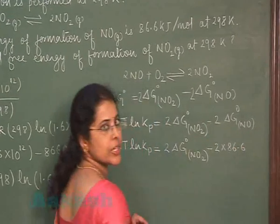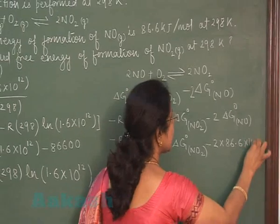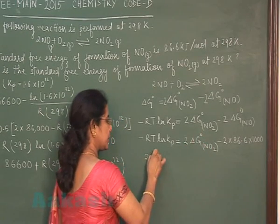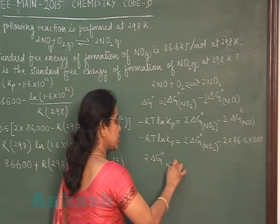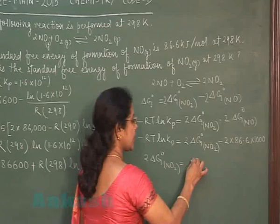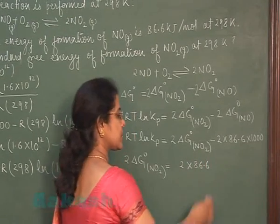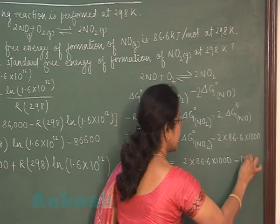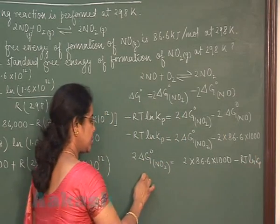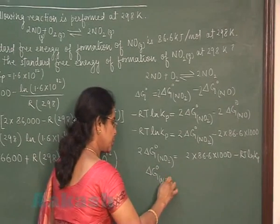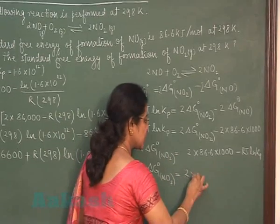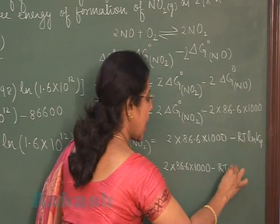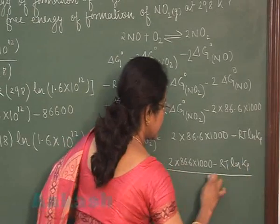We have to find out this value and this value is mentioned in the question. Minus RT ln Kp is equal to 2 into delta G0 NO2 minus 2 delta G0 formation of NO is given. This is 86.6 kilojoule. Converting it into joules. Now we have to find out 2 into delta G0, delta G0 formation of NO2. The expression we have is 2 into 86.6 into 1000 minus RT ln Kp divided by 2.